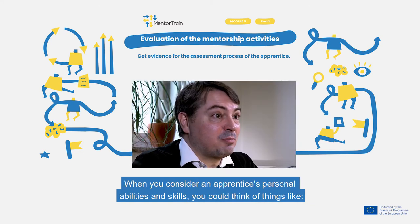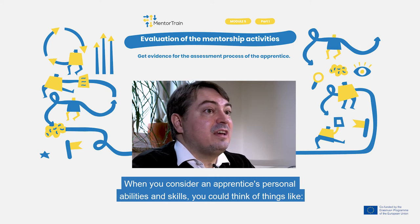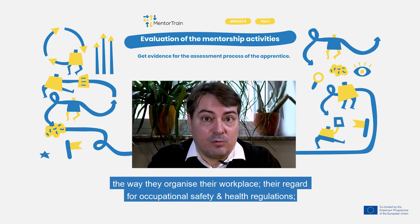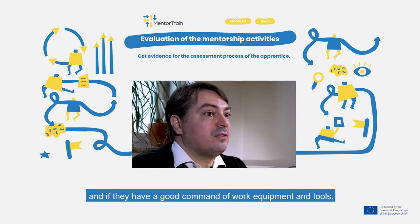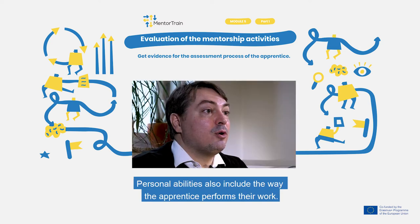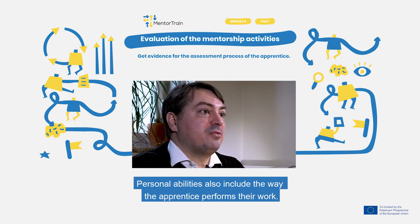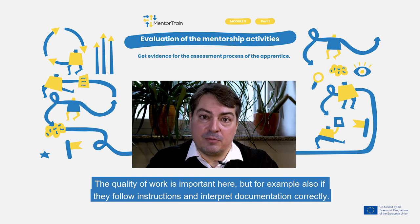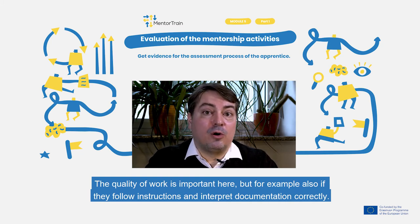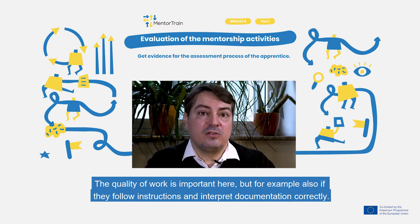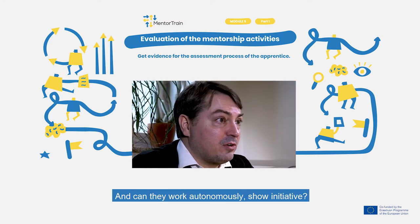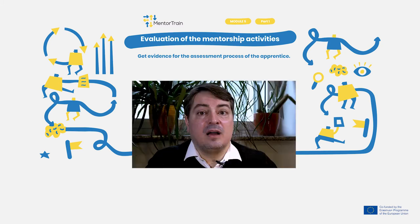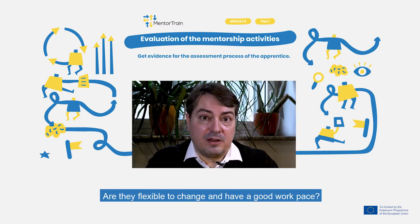When you consider an apprentice's personal abilities and skills, you could think of things like the way they organize their workplace, their regard for occupational safety and health regulations, and if they have a good command of work equipment and tools. Personal abilities also include the way the apprentice performs their work. The quality of work is important here, but also if they follow instructions and interpret documentation correctly, and whether they can work autonomously, show initiative, are flexible to change and have a good work pace.